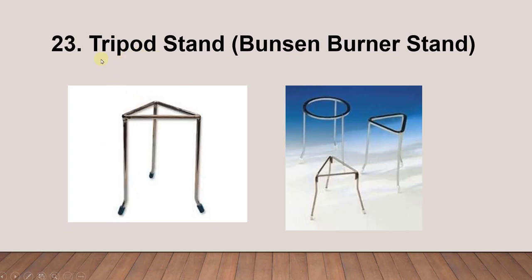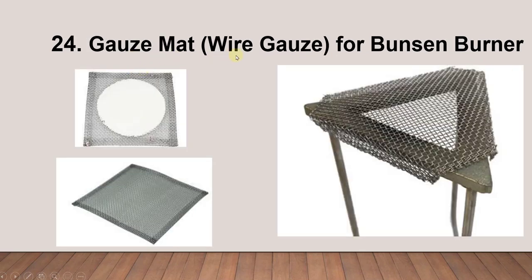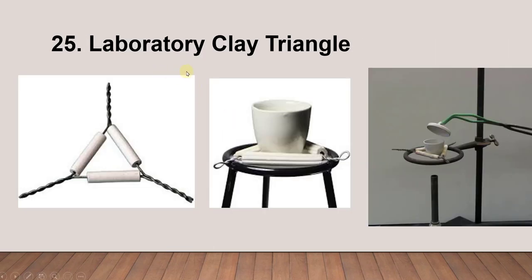Next is the tripod stand, also called the Bunsen burner stand. Next is the wire gauze mat, used as a heat-resistant surface. Next is the laboratory clay triangle. From the figures shown you can understand how to use it and for what purpose.